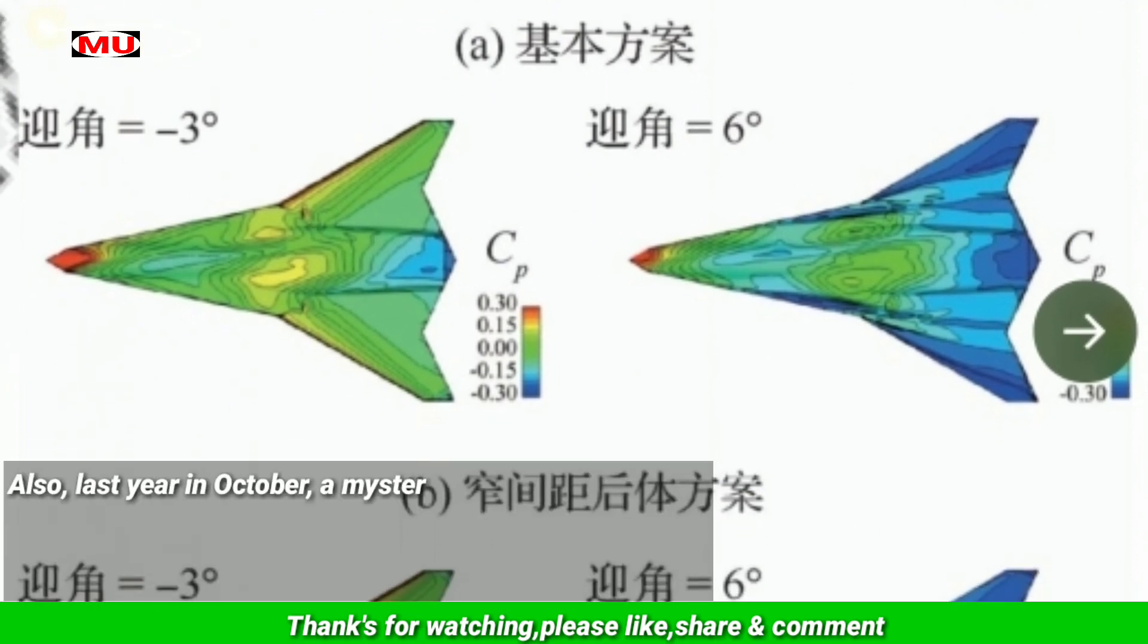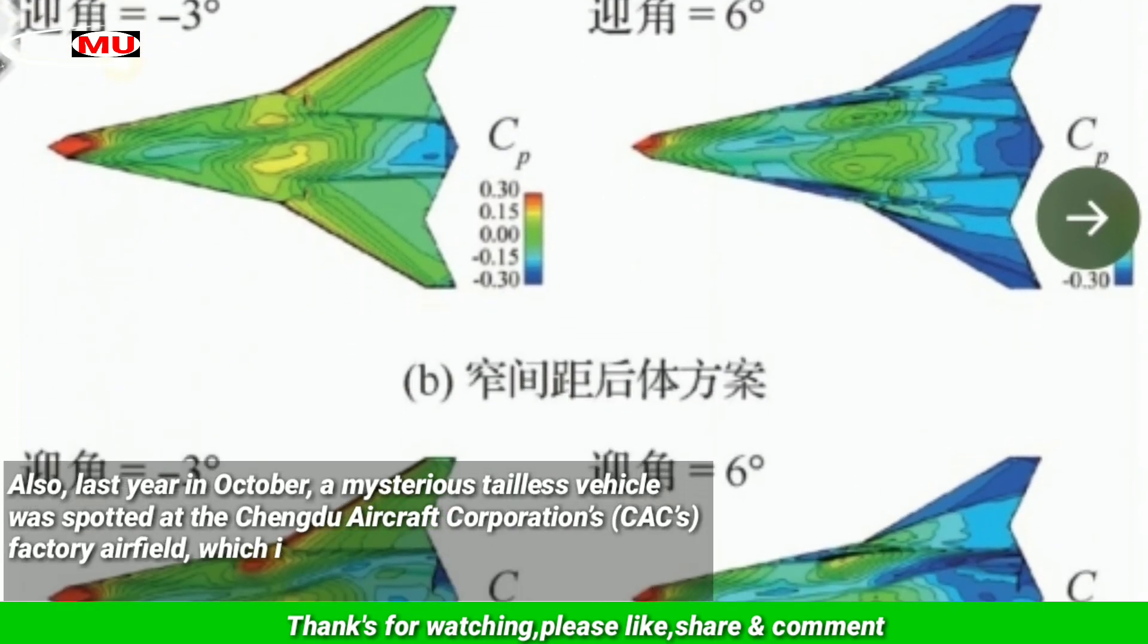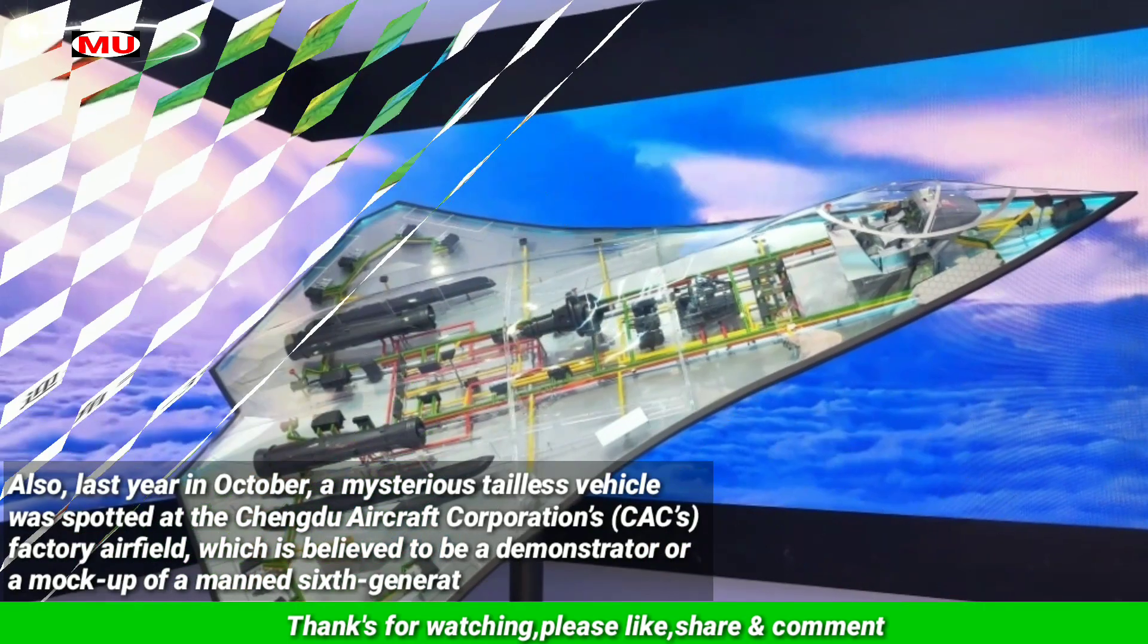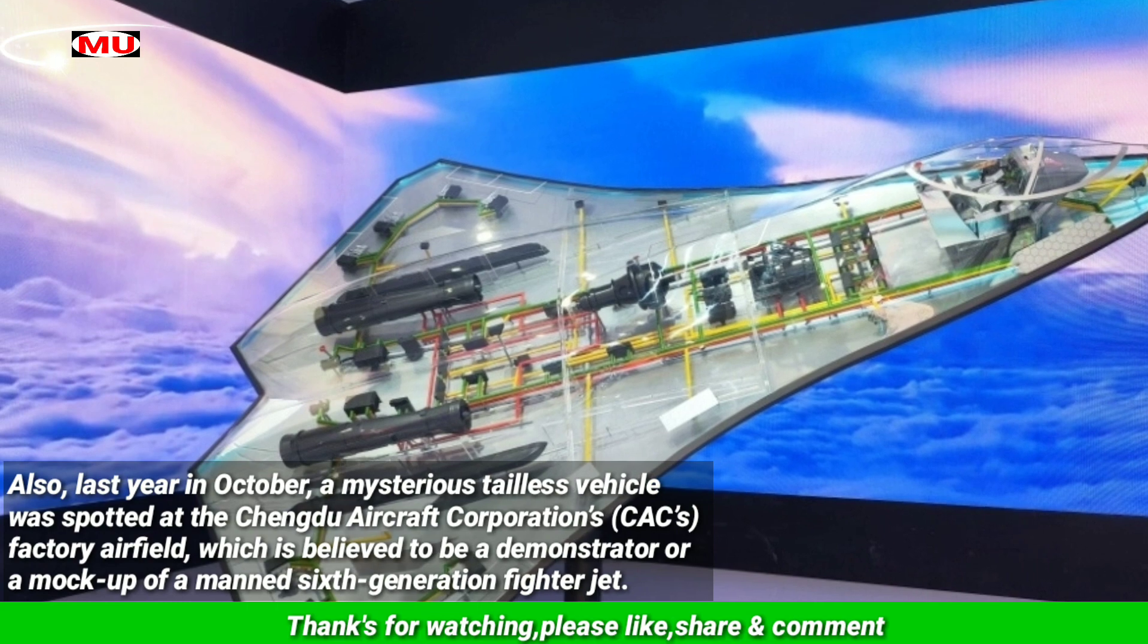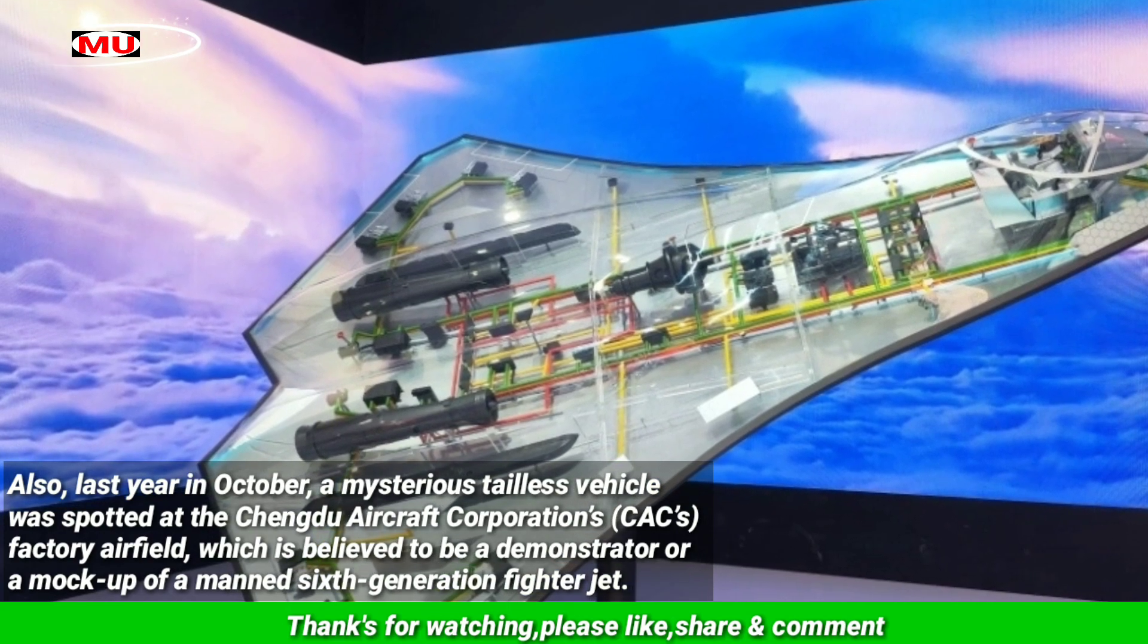Last year in October, a mysterious tailless vehicle was spotted at the Chengdu Aircraft Corporation's factory airfield, which is believed to be a demonstrator or mock-up of a manned 6th-generation fighter jet.